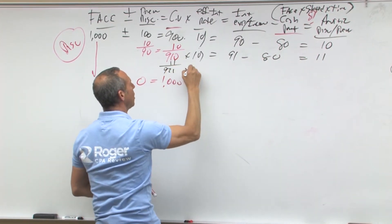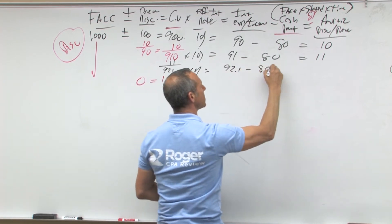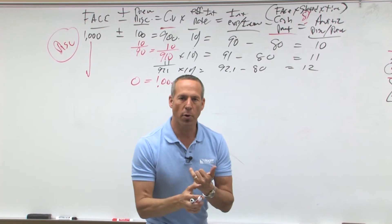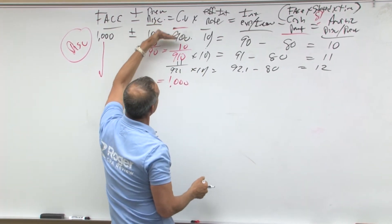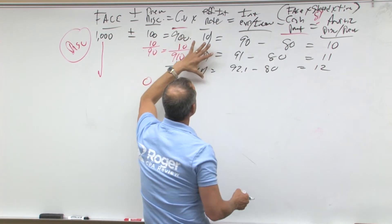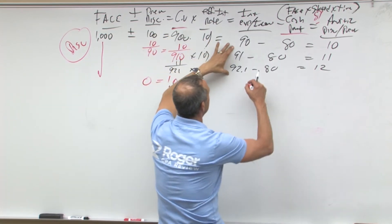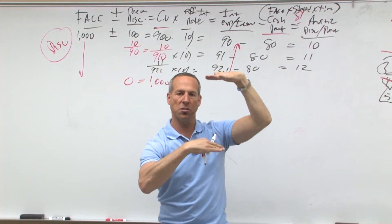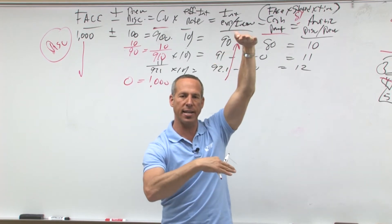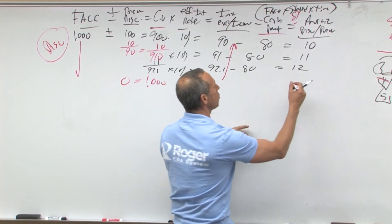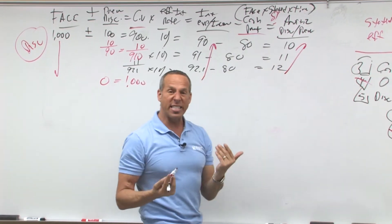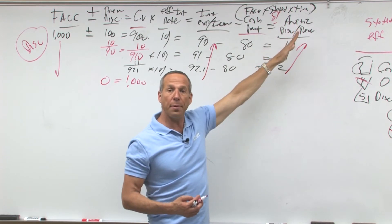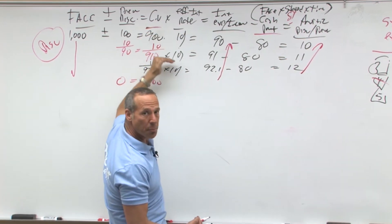This goes up: 921 at 10% is 92.1, minus 80 equals 12. Very important for theoretical questions — in a discount, it starts small and gets bigger. If you're multiplying it times the effective rate, as the carrying value gets bigger, your interest expense gets bigger: 80 versus 90, 80 versus 91, 80 versus 95, 80 versus 99. What happens to the difference every year? It also gets bigger. So in a discount, interest expense and amortization go up, because it starts at 900 and ends up at a million.